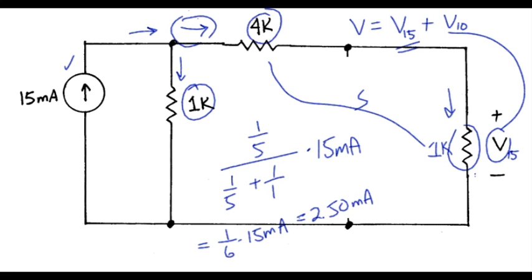So that means we've got 2.5 milliamps flowing through the 1K resistor means V15 is 2.50 volts. So that's the first half.